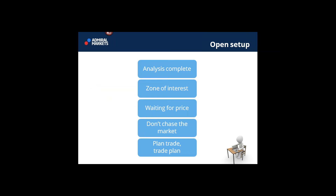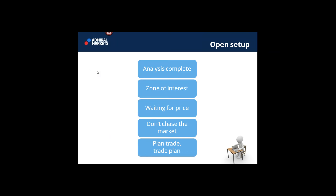The key is to plan to trade and trade the plan. If I say I'm waiting for price to hit the 50 fib and price moves away after hitting it and I then decide to enter, that's chasing the market. Just because price bounced off the 50 fib doesn't mean it's too late — I often wait for a candlestick pattern at the 50 fib. But if you don't take the trade and see a couple of candles move away and then enter, that's chasing. Plan trade, trade plan.